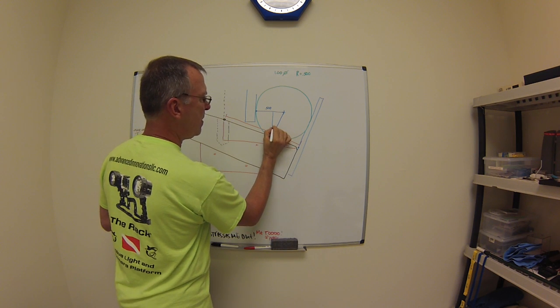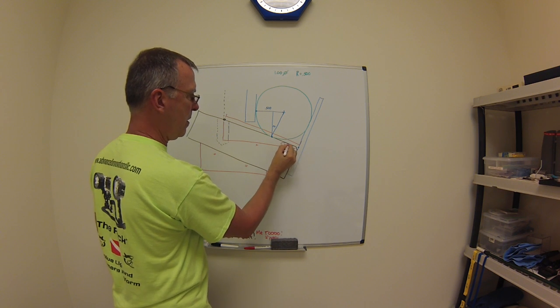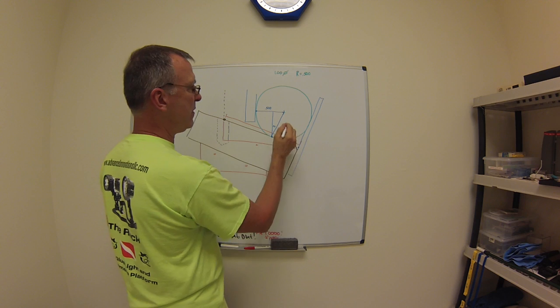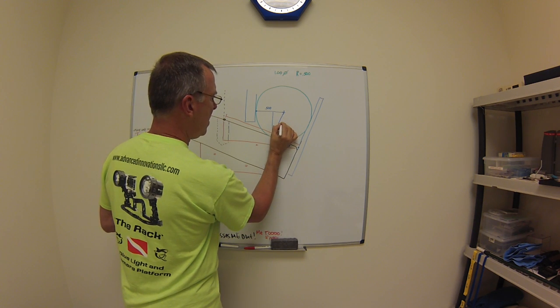This will end up to be the same angle as the given on your print, 20 degrees. What's this leg? It's the radius of the pin because it goes from the center to the tangent, 500.